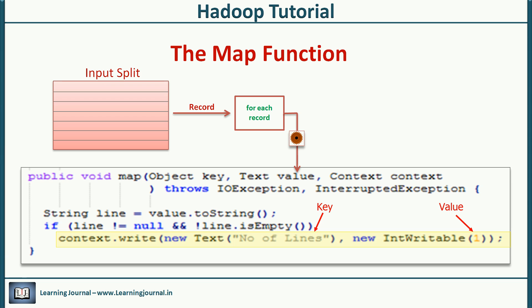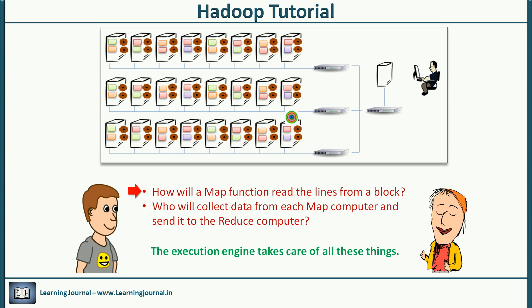The map function is supposed to give its output record back to the framework. The structure of the output record is again a key-value pair. So what are we writing out? Every time we get a non-empty line, we write one and a fixed key. All these map output records go back to the framework. So you have an answer to your first doubt. Let's come to the second one.